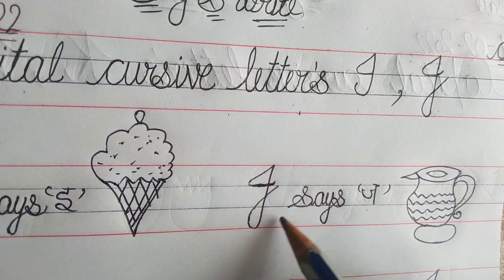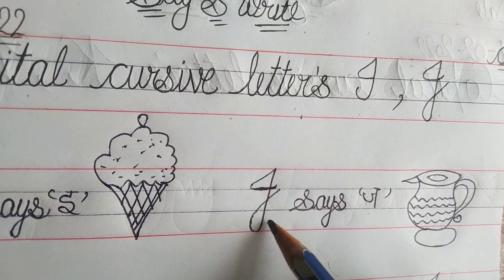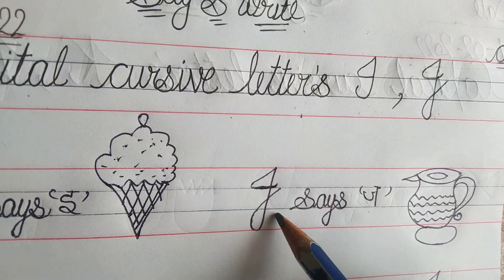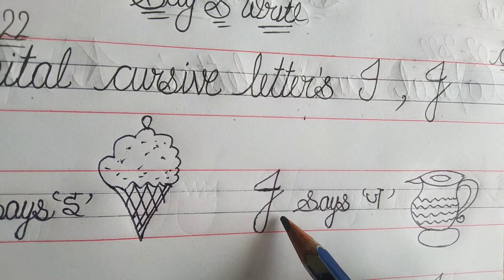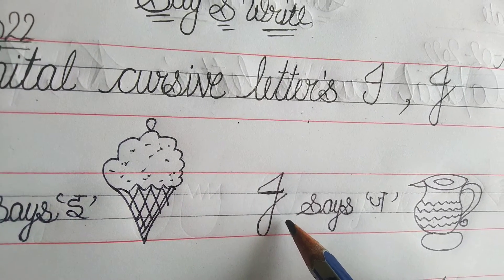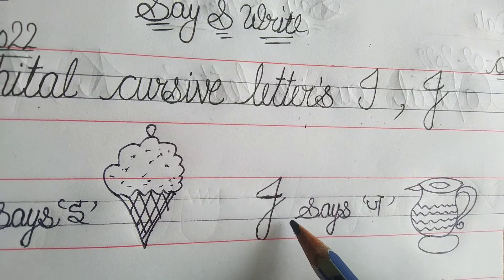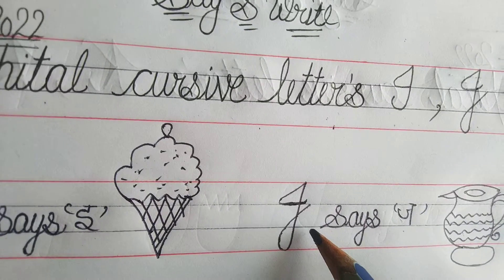Okay students, the next letter is J — J jerk. How to write? J jerk. Let's start.